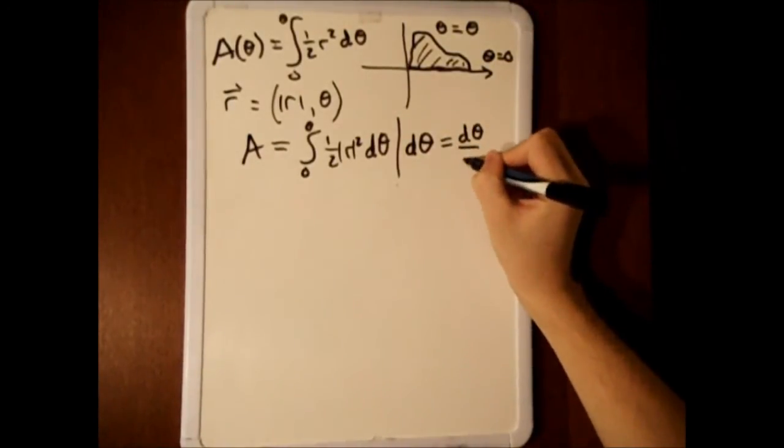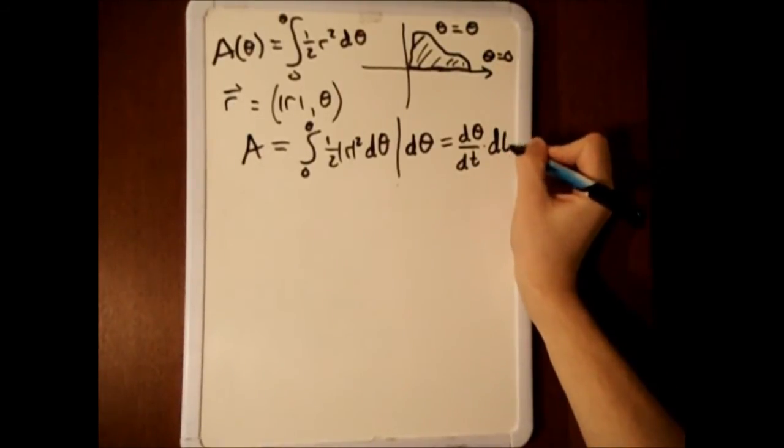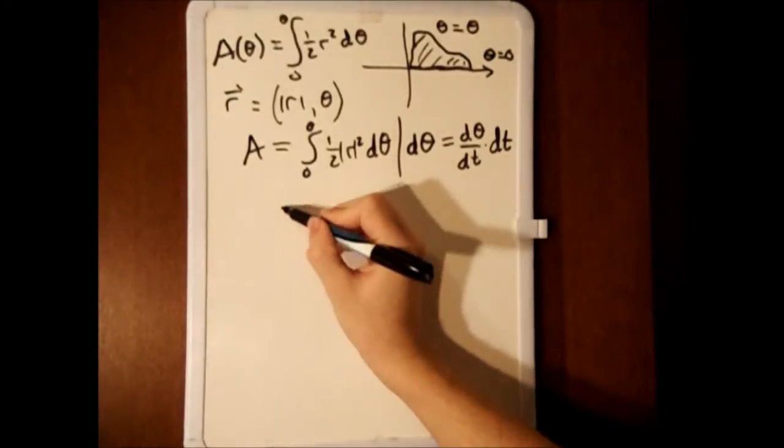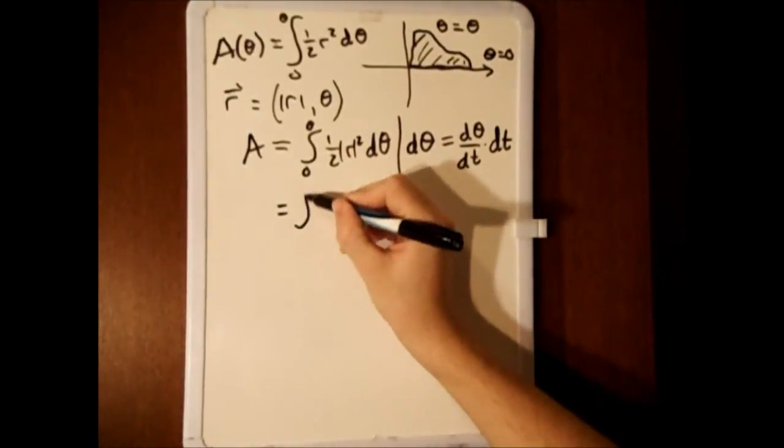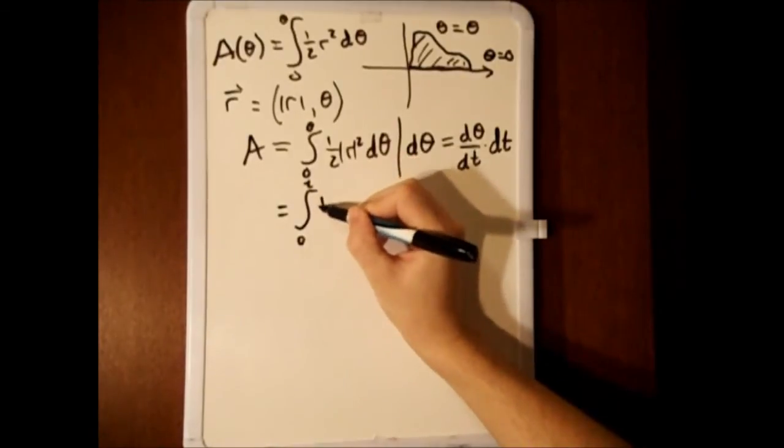We know that an infinitesimal change in angle d theta is equal to the derivative of that angle with respect to time times an infinitesimal change in time dt. We must also change the upper and lower bounds of the integral to go from 0 to t rather than from 0 to theta.